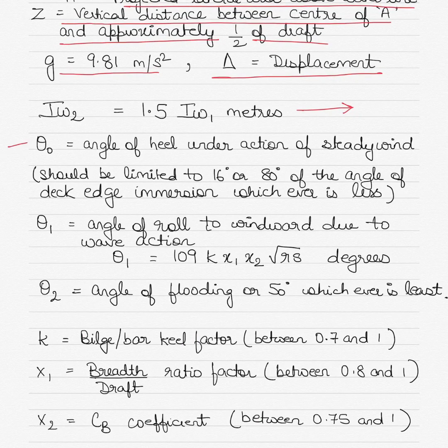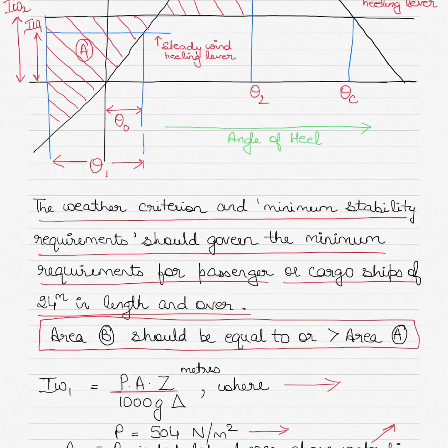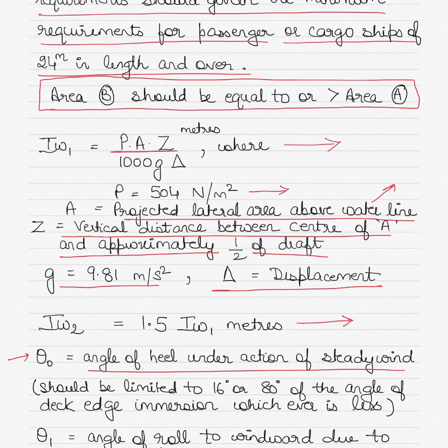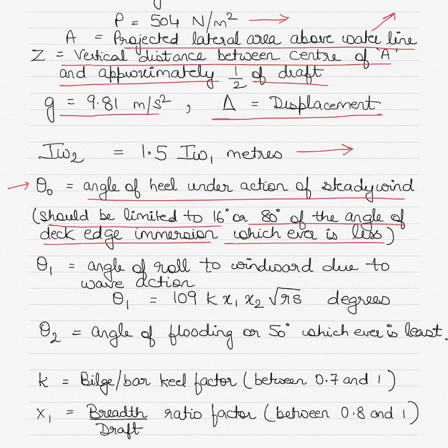Theta naught is the angle of heel under action of steady wind, as you see in the diagram above. This should be limited to 16 degrees or 80% of the angle of deck edge immersion, whichever is lesser of the two.